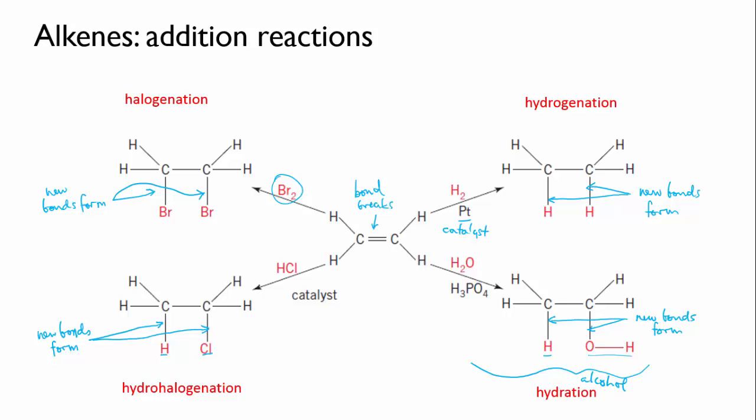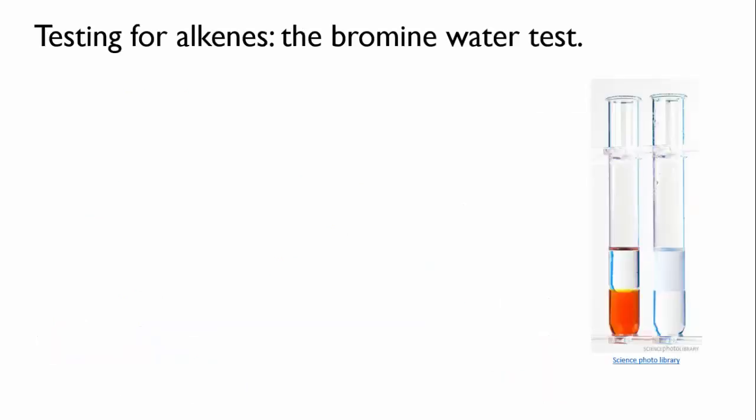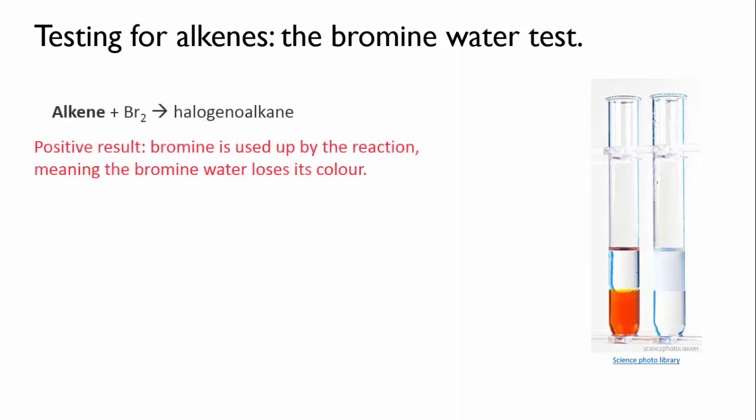This difference in the chemical properties of alkanes and alkenes, this specific ability of alkenes to add things across the double bond, gives us a really convenient way of distinguishing them, despite the fact that visually they look identical. As we've just said, alkenes will react with halogens easily at room temperature. Alkanes, on the other hand, are quite unreactive, and to make them react with halogens, you would need to expose them to UV light or high temperatures. This difference gives us the bromine water test.